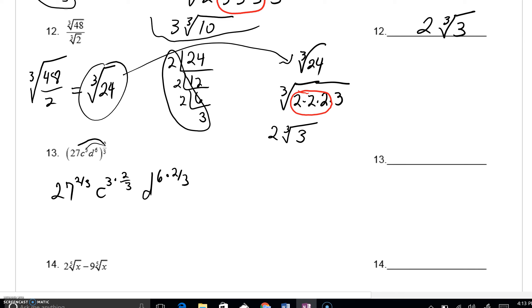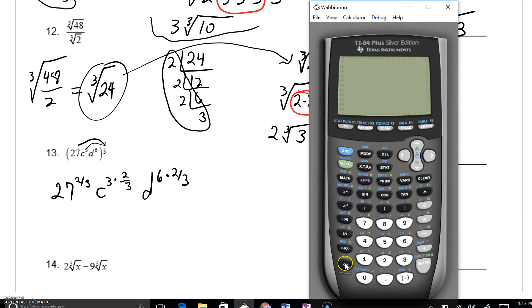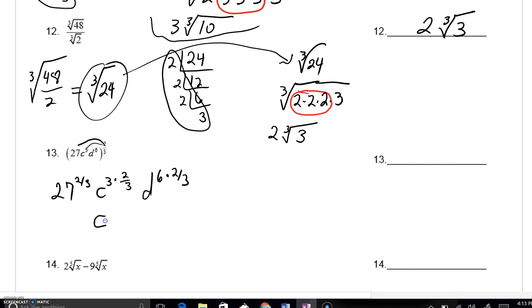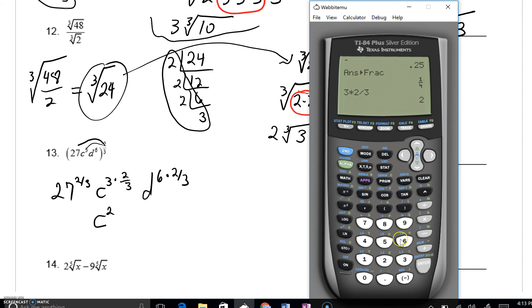So what you're seeing is you'll have 3 times 2 thirds and 6 times 2 thirds. If fractions have given you any issues, please do just get some assistance with the calculator. Go 3 times 2 thirds. You can see that would be a 2. So this would be C to the 2nd. With our D, we can say 6 times 2 thirds. And 6 times 2 thirds, you can get very quickly to be a 4.